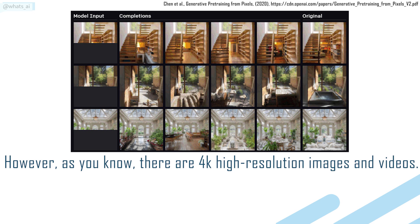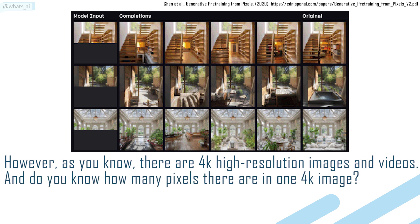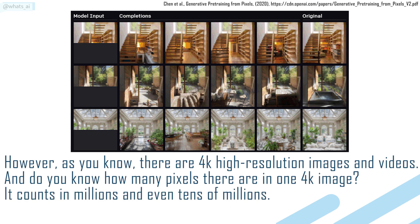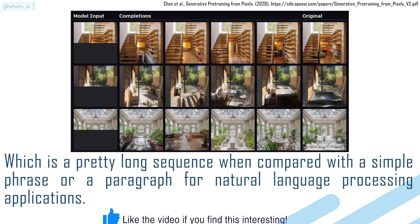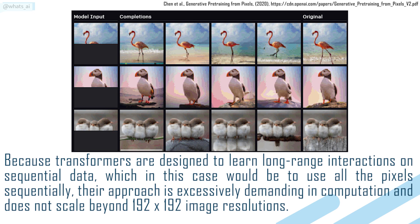There are 4K high-resolution images and videos, and do you know how many pixels there are in one 4K image? It counts in millions and even tens of millions, which is a pretty long sequence when compared with a single phrase or paragraph for natural language processing applications. Because transformers are designed to learn long-range interactions on sequential data, which in this case would be to use all the pixels sequentially, their approach is excessively demanding in computation.